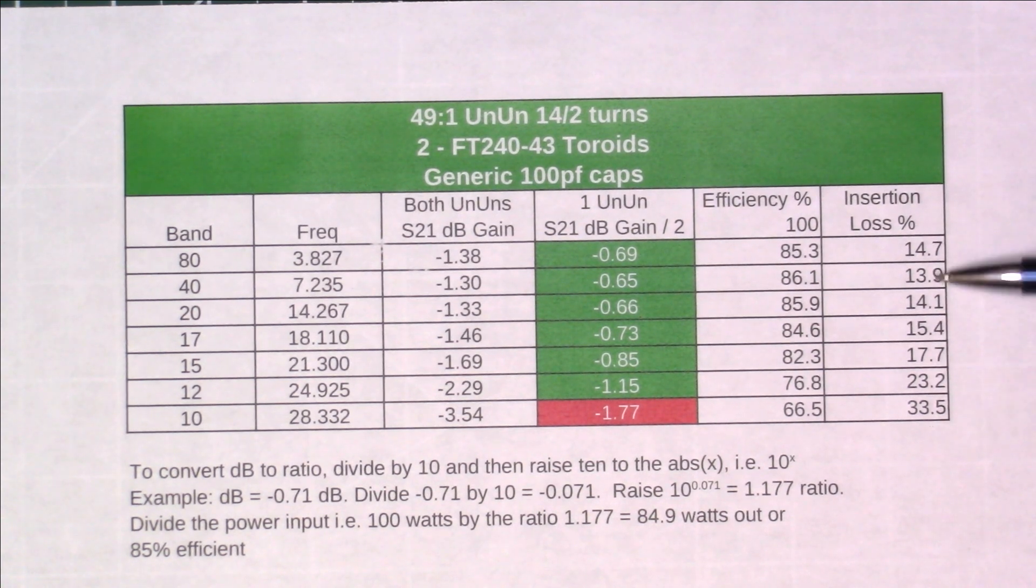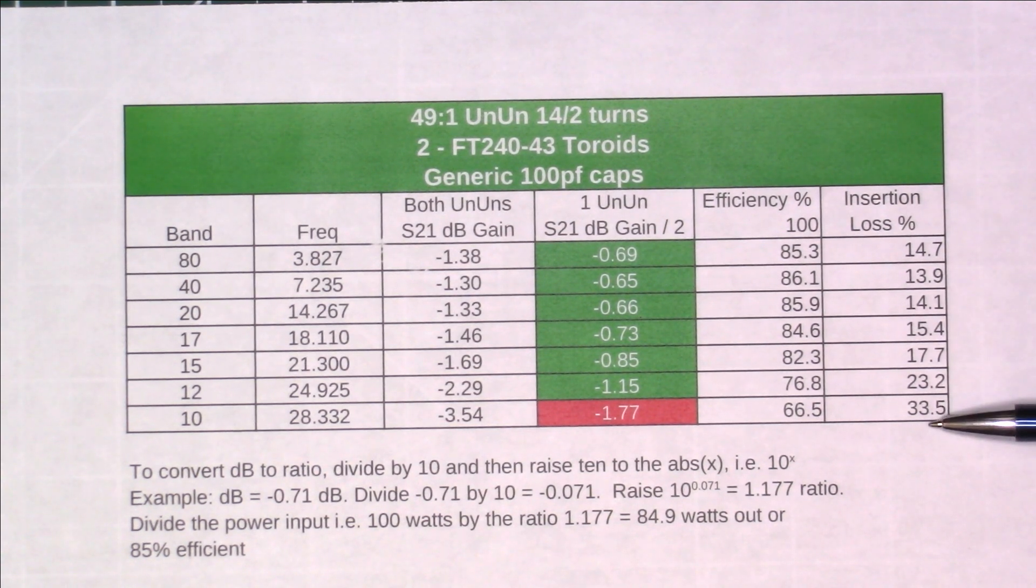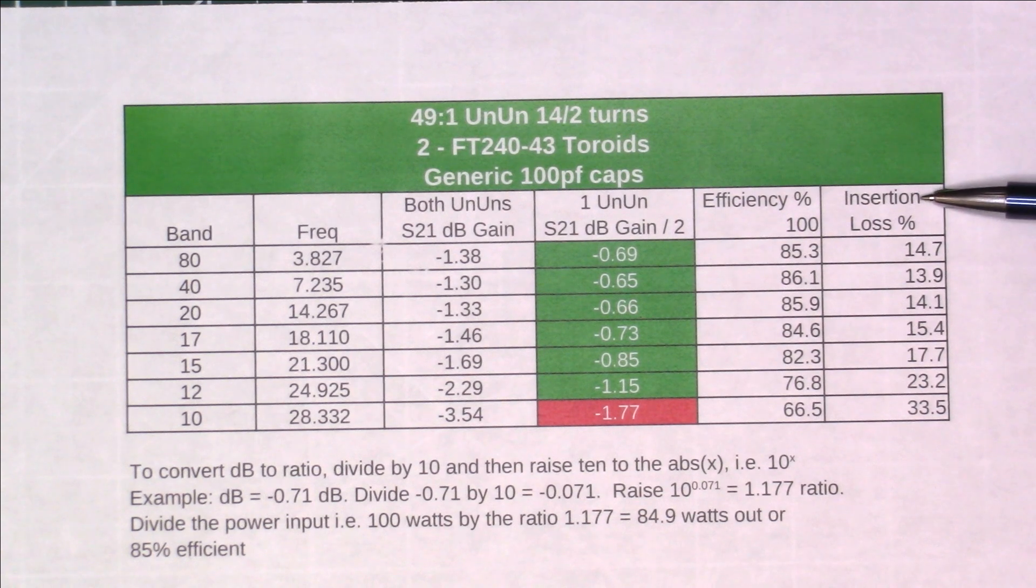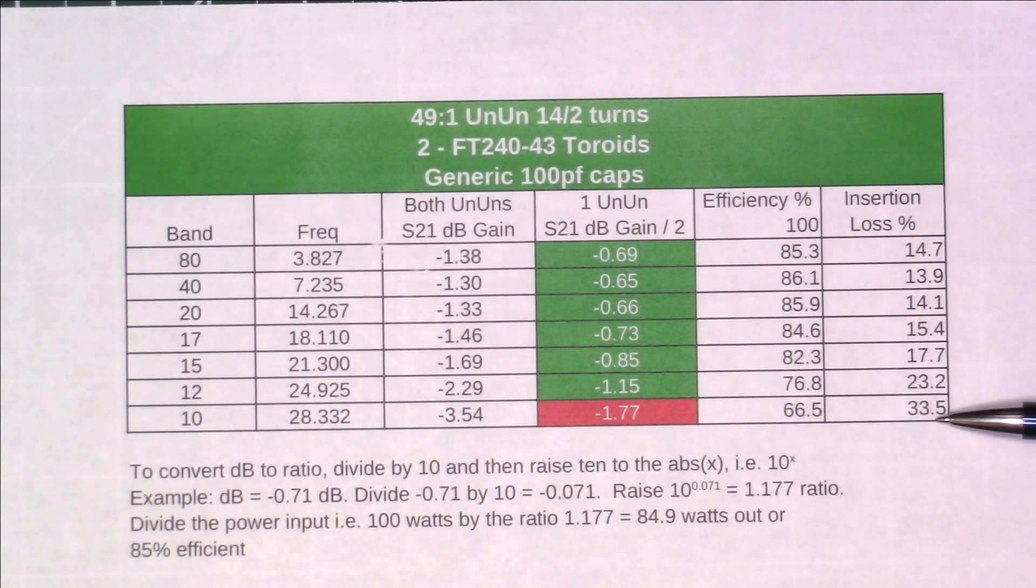This wattage here is never making it to your antenna. It's being consumed or lost as heat going through the core of the transformer, so it never gets through. And conversely, any signals that are being received also have this same insertion loss. So the signal coming in from your antenna is reduced by this much across these bands as well.